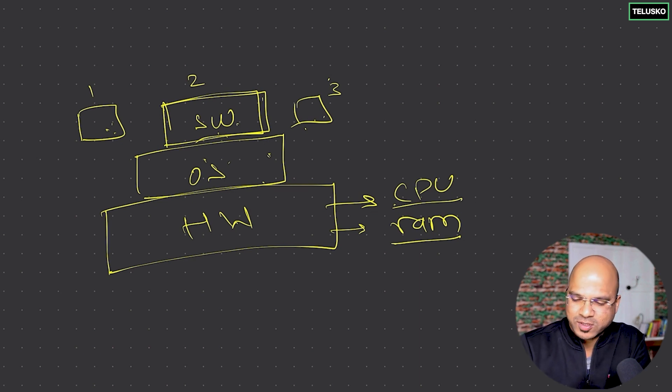That's why we can achieve multitasking. And that's why, at the same time, you can browse a web page, you can listen to music, you can type code. You can do all those things at the same time because you have a concept of multitasking.